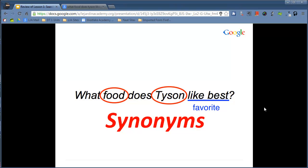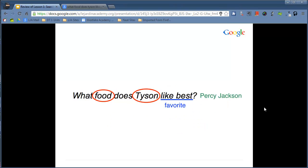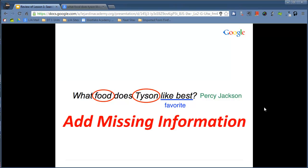Unfortunately, when Google does a search, like and best might not even end up anywhere near each other. So instead of using two words that mean one thing, we're going to use one word. And in this case, it's favorite. Step three for parsing is to ensure that if there's any missing information, we add it in. So in this case, to make a more targeted, specific search, because we're looking for a very specific Tyson, we're going to make sure that we add in the missing information: Percy Jackson.